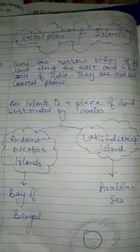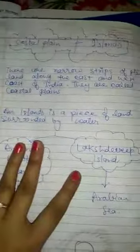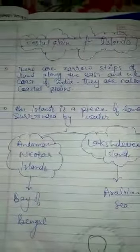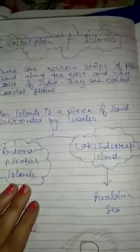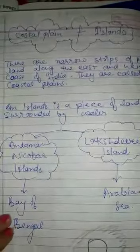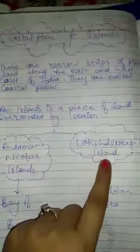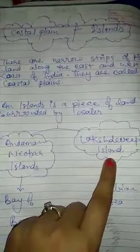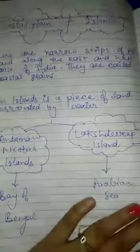Now, what is an island? An island is a piece of land surrounded by water. Basically, India has two types of islands: first, the Andaman and Nicobar Islands, which lie in the Bay of Bengal, and the Lakshadweep Islands, which lie in the Arabian Sea.